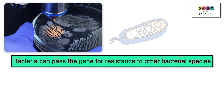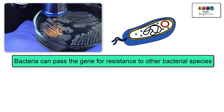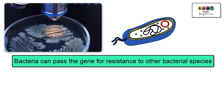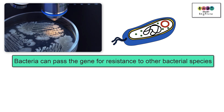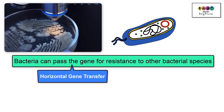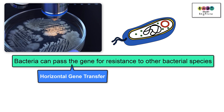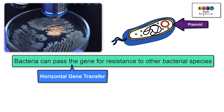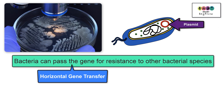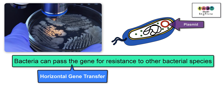A further consideration is that bacteria can pass the gene for resistance to other bacterial species — a process known as horizontal gene transfer. This can happen in a number of ways, but one method is when the bacterial plasmid containing the gene for antibiotic resistance is passed into another bacterium.